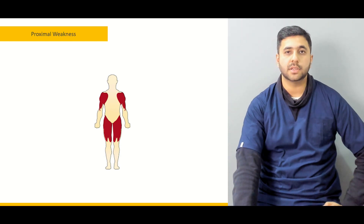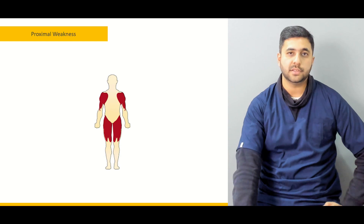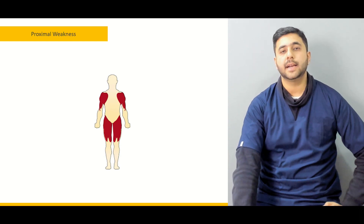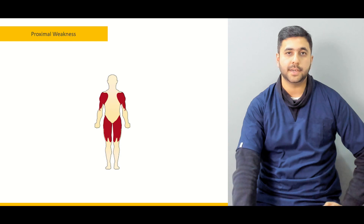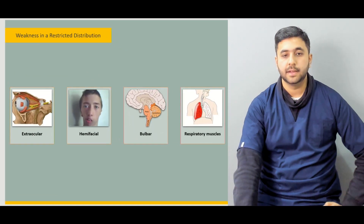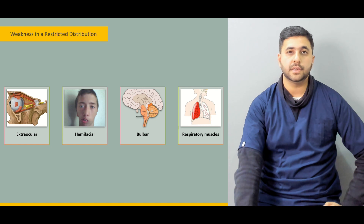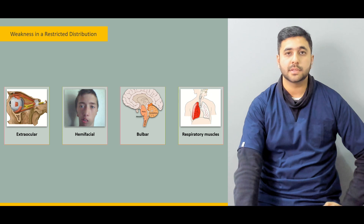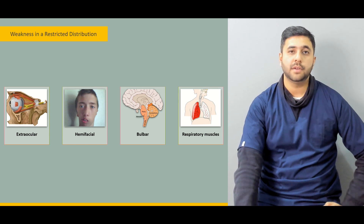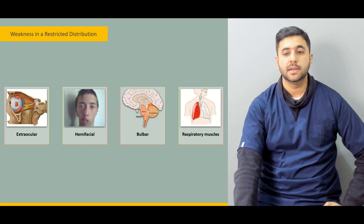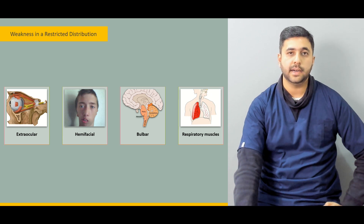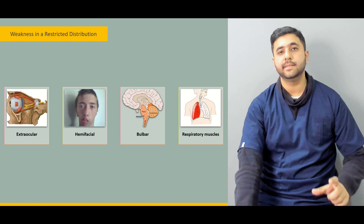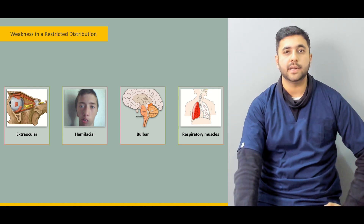What are the differentiating points? What are the common causes of all these types of presentations, and clinically how do we differentiate one presentation from another? Similarly, we can present with a weakness in a reduced or restricted distribution — for example, the weakness might be restricted to an extraocular muscle, involving a cranial nerve. For example, a fourth nerve problem can present with just an extraocular problem while everything else is fine. These give us a very good clinical sign to localize the area of the nervous system being affected and leading to the weakness.